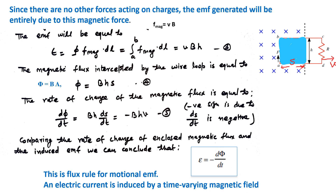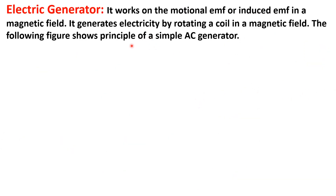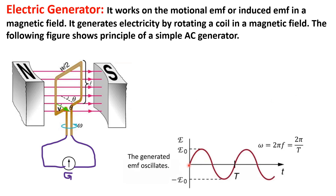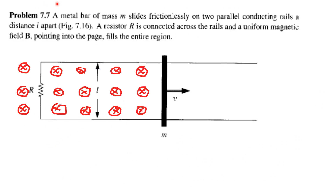An electric current is induced by a time-varying magnetic field. Now we will discuss the electric generator, which works on motional EMF and generates electricity by rotating a coil in a magnetic field. As the coil rotates from 0 to 360 degrees, we first get maximum EMF, then zero, then maximum again, producing a sine wave — alternating current. This is how an AC generator works.